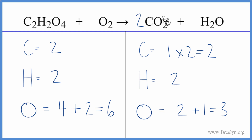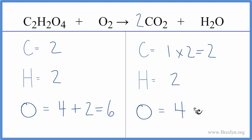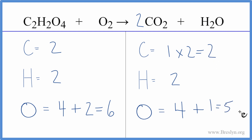So now we have two times two — that's four — plus we have one oxygen here, which gives us five oxygens on the product side.